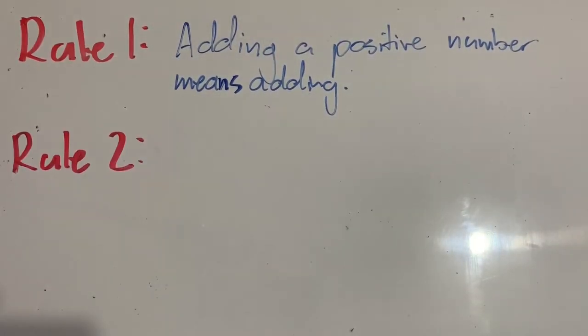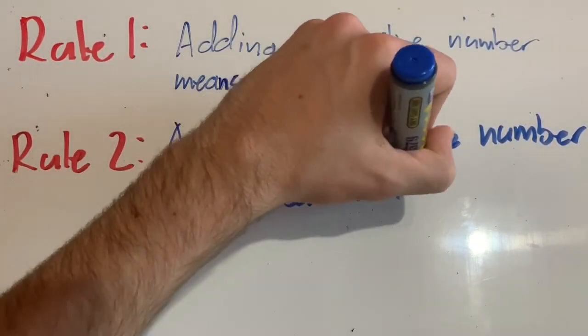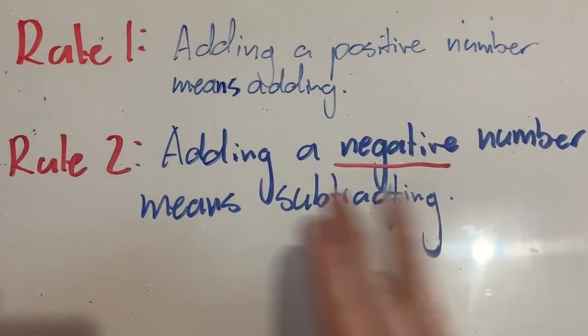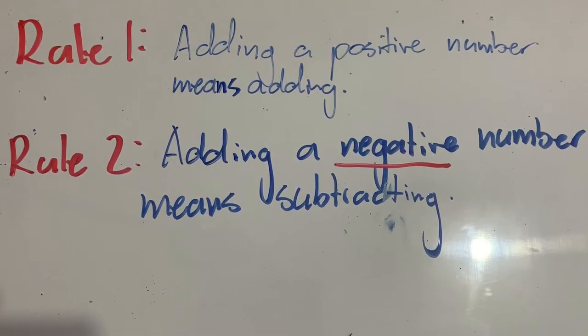Our second rule is that adding a negative number means subtracting. But why? That doesn't make a lot of sense, does it? Adding a negative number means subtracting. Well, let's look at this in an example.